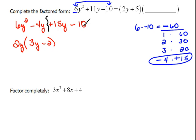And in the second two terms, they both have a 5 in common. If I pull out that positive 5, 5 times 3y would give us 15y, and 5 times negative 2 would give us negative 10.